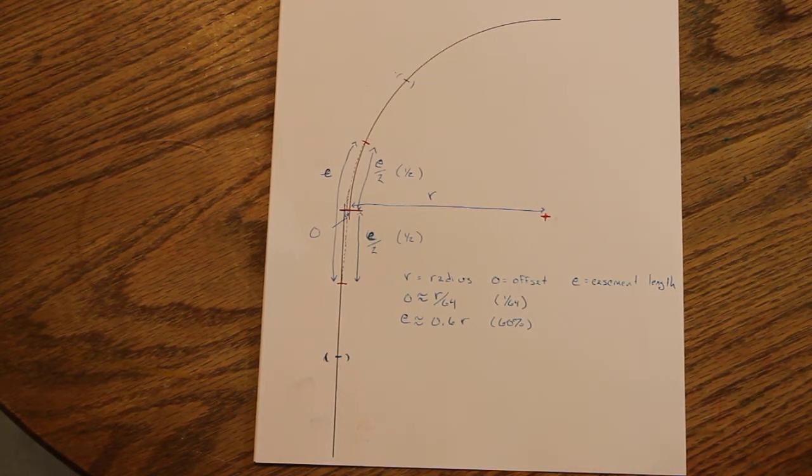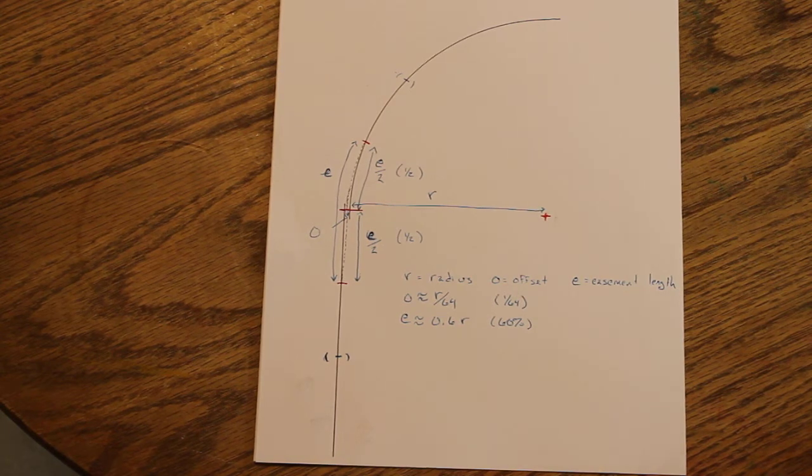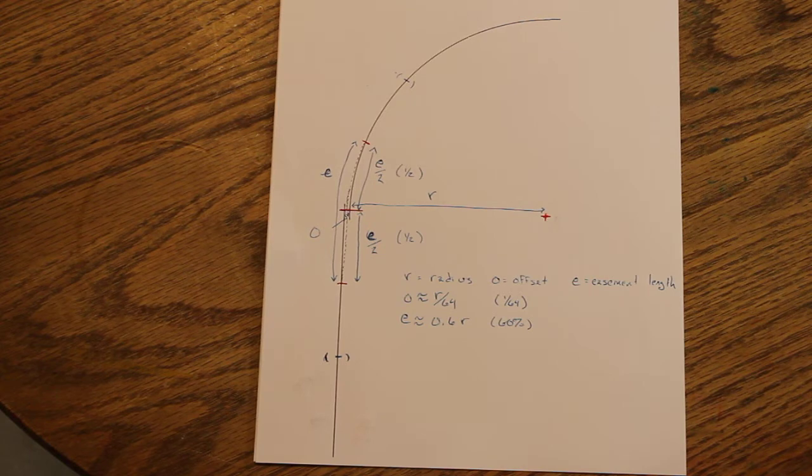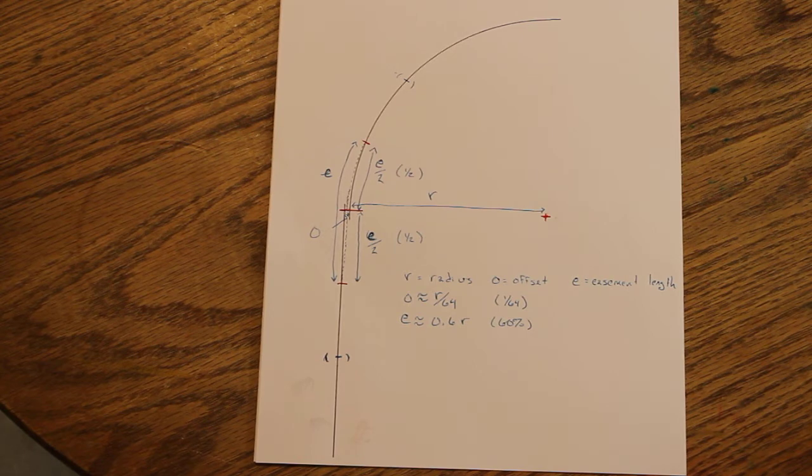Okay everybody, I'm making a little addendum here to correct a mistake that I made on the video that I posted earlier today on laying out easements on your model railroad track.